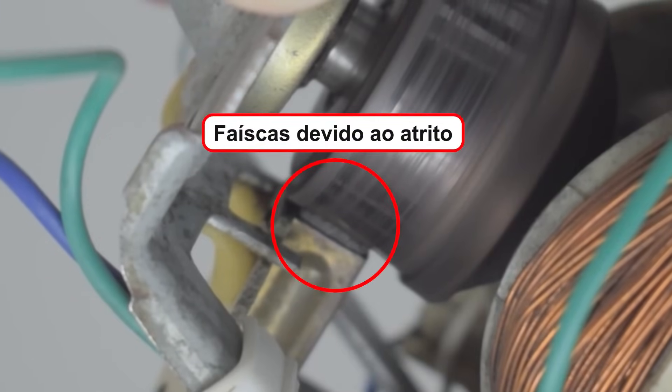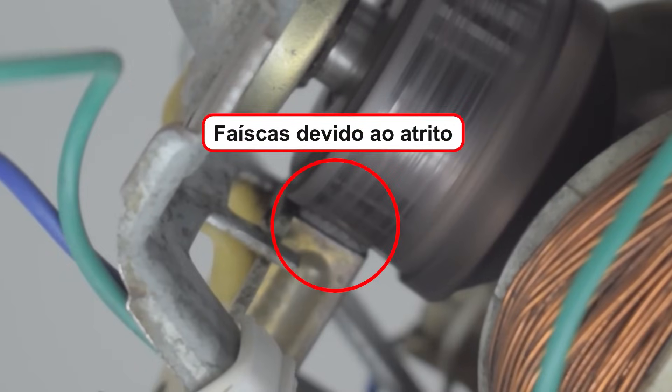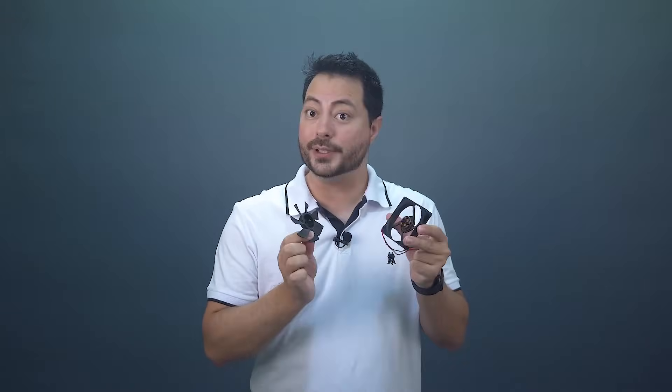But this contact ends up causing friction and wear over time and eventually the motor will stop working and you'll have to replace the brushes or the commutator because of this wear. But when we look at brushless motors, they simply don't have brushes and commutators and the system that allows the motor to spin is now done electronically.